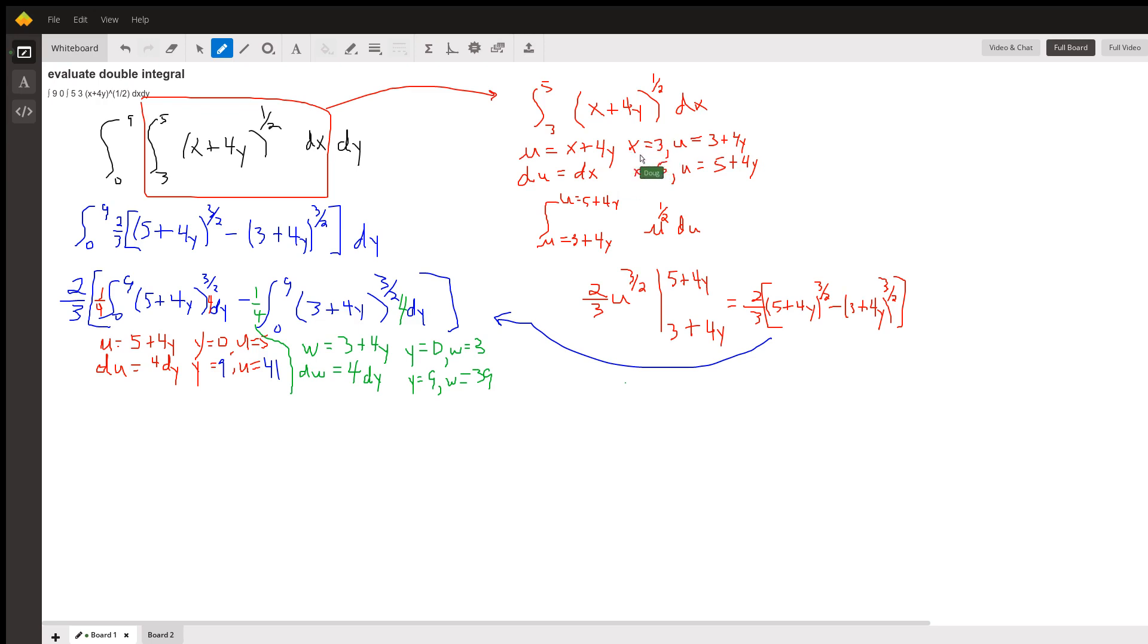I change the limits of integration at the same time. When x is 3, u is 3 plus 4y. When x is 5, u is 5 plus 4y. So this is the definite integral that I'm evaluating.